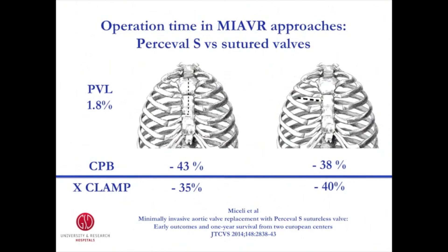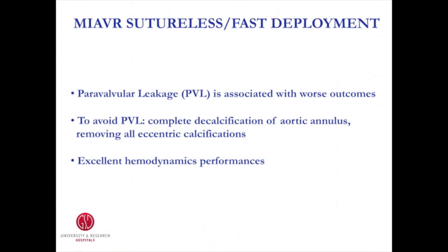Moreover, we found a very low incidence of paravalvular leakage of around 1.8%. It has been shown that significant paravalvular leakage is associated with worse outcomes. To avoid paravalvular leakage when using sutureless or fast-deploying valves, we strongly recommend removing old eccentric calcification and creating a complete decalcification of the aortic annulus.